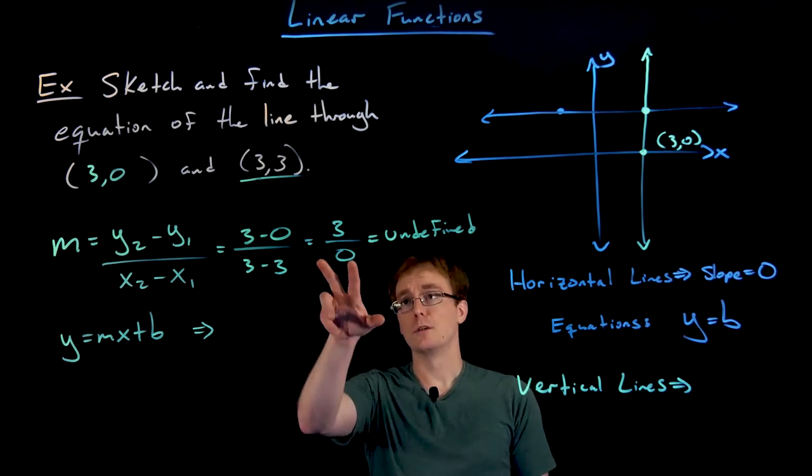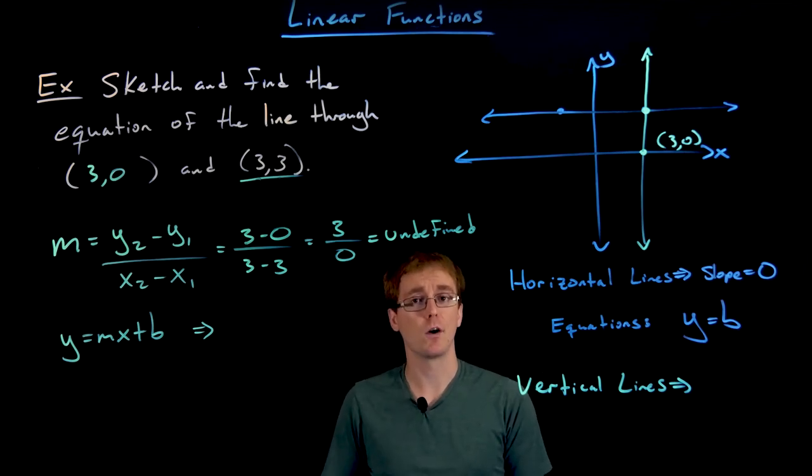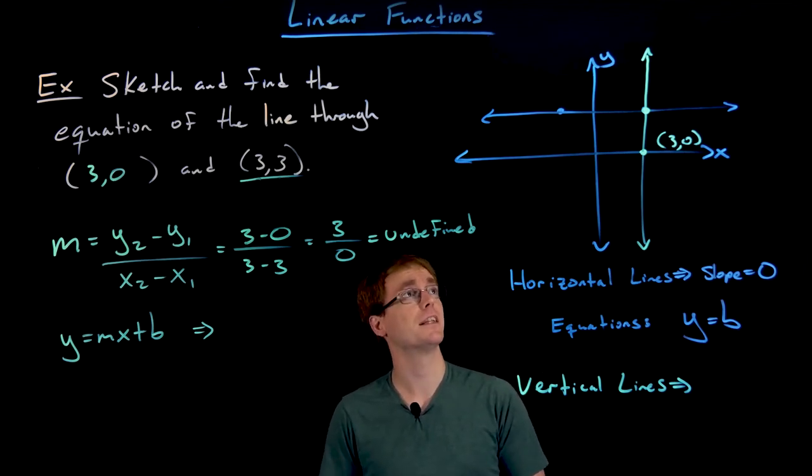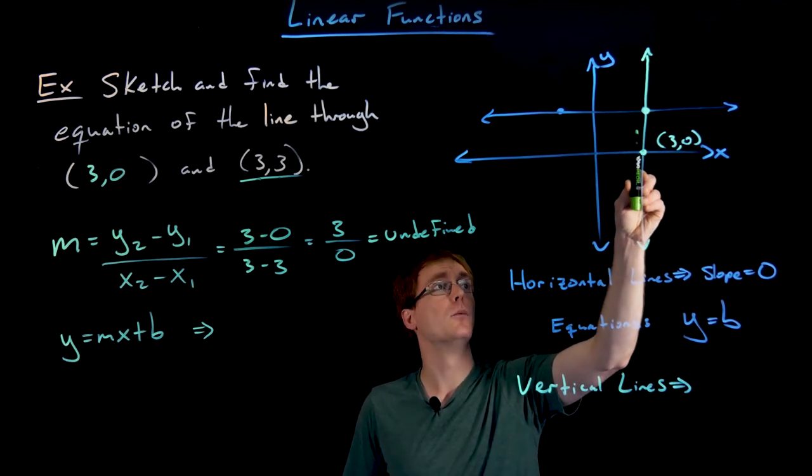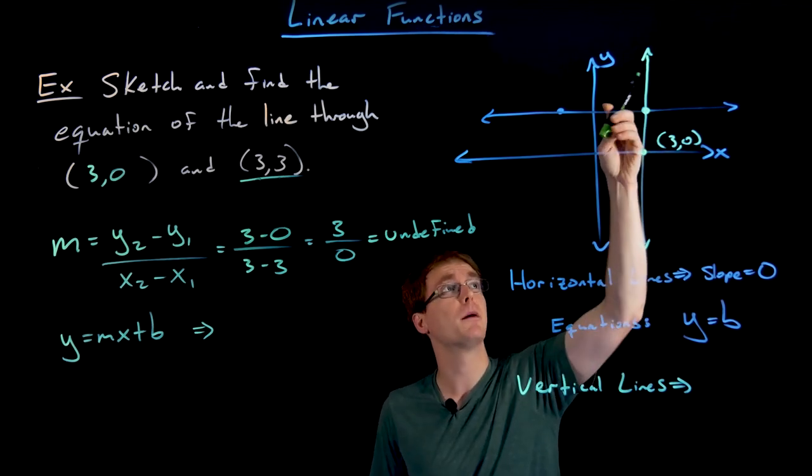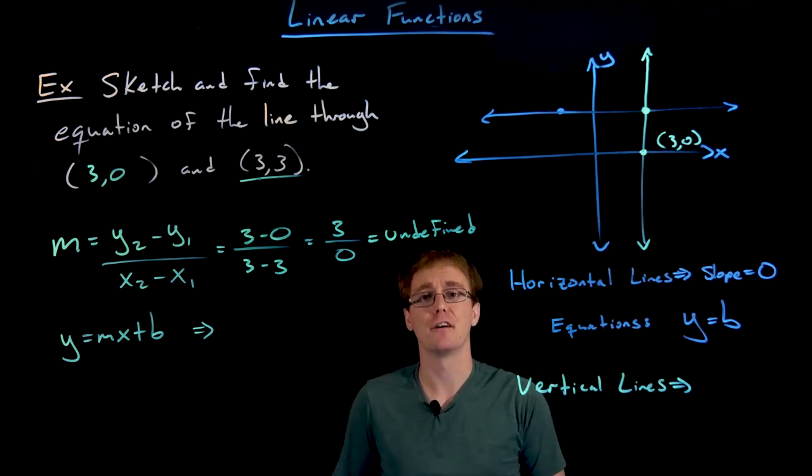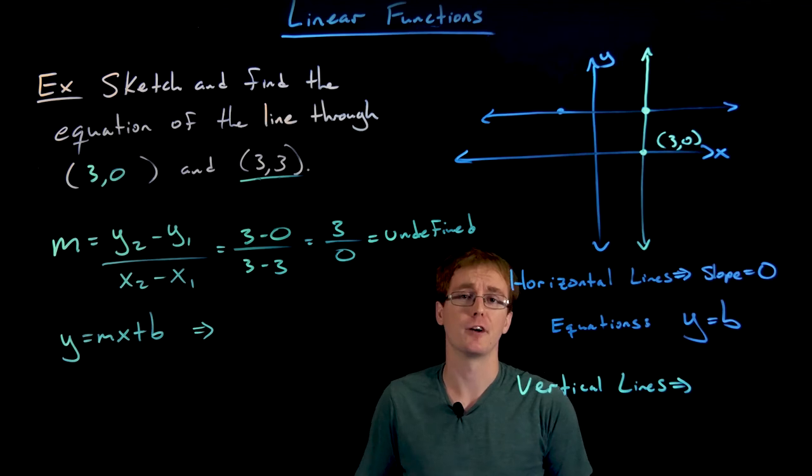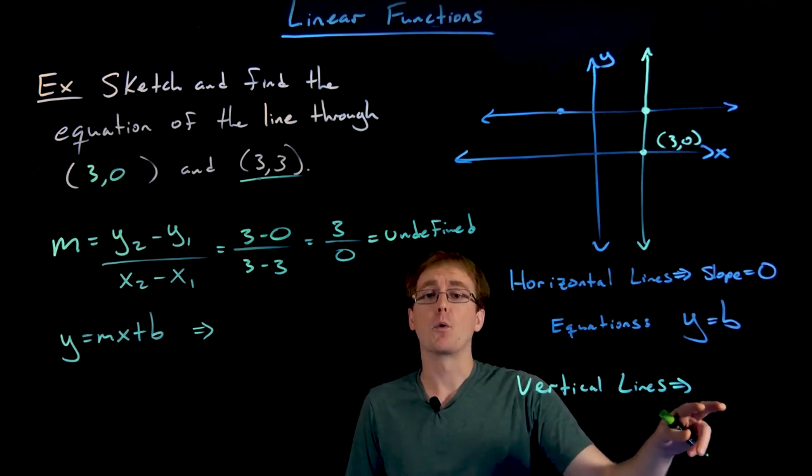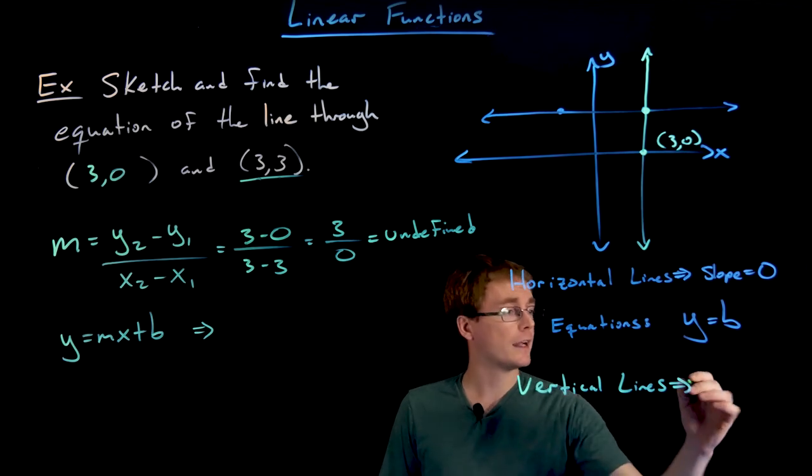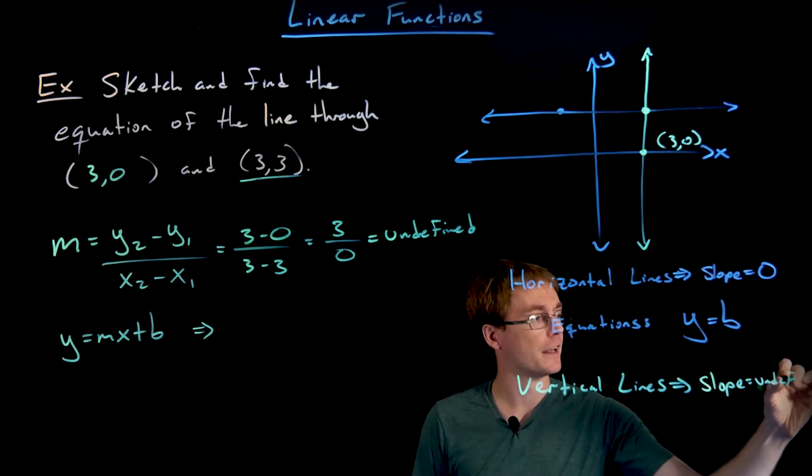When we tried to calculate the slope using our known slope formula, we end up with this expression or quantity that is undefined, and that makes sense. When we look at the slope of our line, it is a vertical line. We can't tell if that is pointing straight up or straight down, which is part of the reason why we're getting this undefined quantity. Really, it's all coming from this division by 0. So this is going to be one of our important notes about these vertical lines. Vertical lines will always have a slope that is undefined.